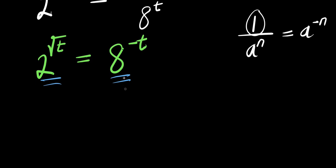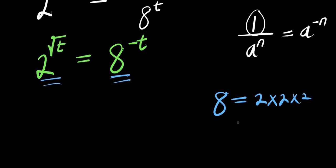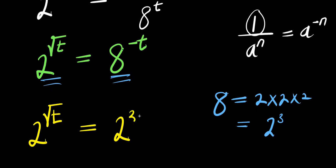To achieve this, we need to express 8 in terms of 2. So 8 is just 2 times 2 times 2, which is 2 to the power 3. So we have 2 to the power square root of t equals 2 to the power 3, raised to the power of negative t.